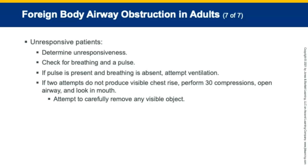For unresponsive patients where a pulse is present but breathing is absent, open the airway and attempt to ventilate. If the first ventilation does not produce visible chest rise and fall, reposition the airway and attempt again. If both ventilation attempts fail to produce visible chest rise, perform 30 compressions, then open the airway, look in the mouth, and attempt to carefully remove any visible object.